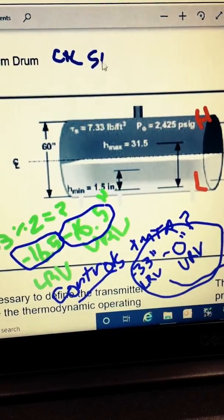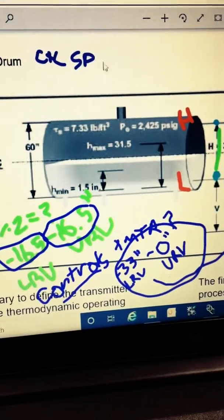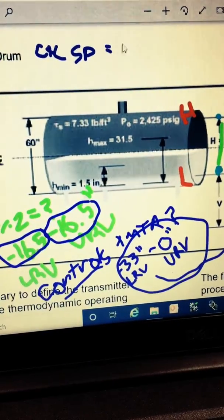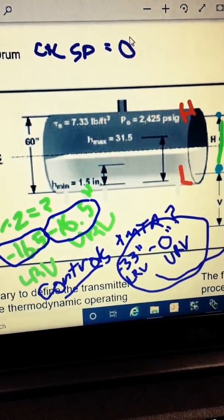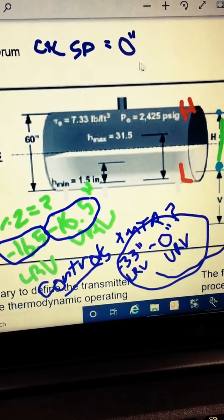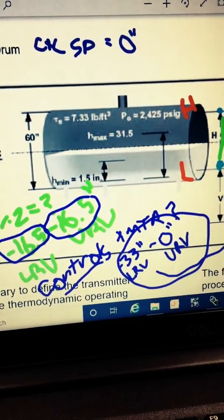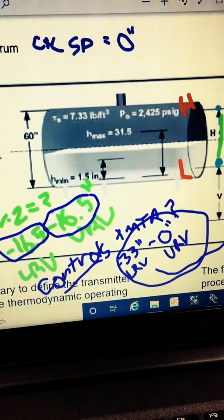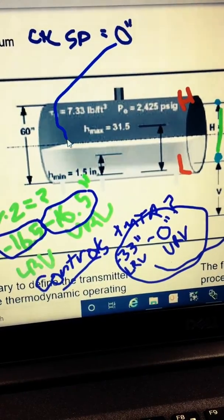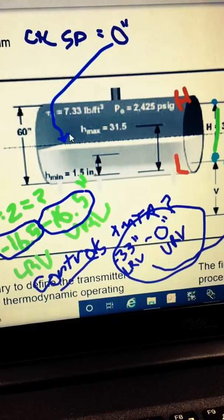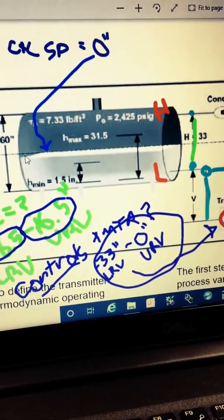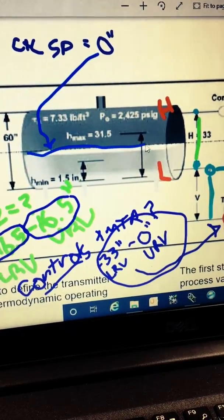And the reason you're going to do that is because you ultimately want zero to be the nominal level that you're trying to control to, zero inches, which would be, in theory, 50% level. So your control set point would be zero inches, which should give you a level that basically was at the center of the drum.